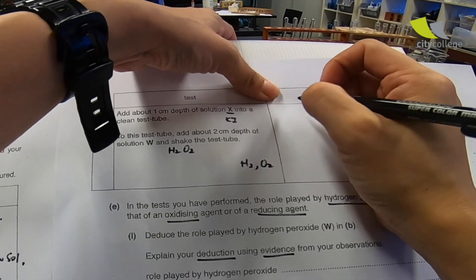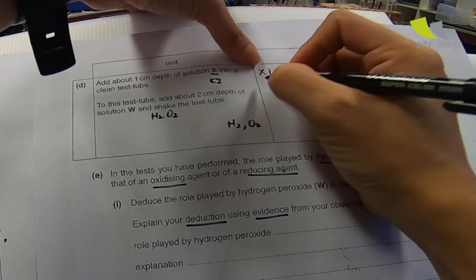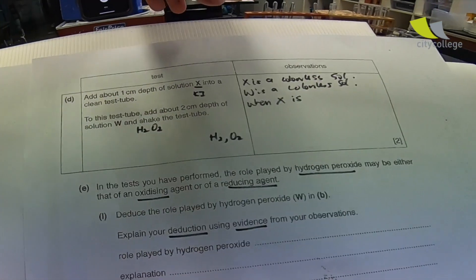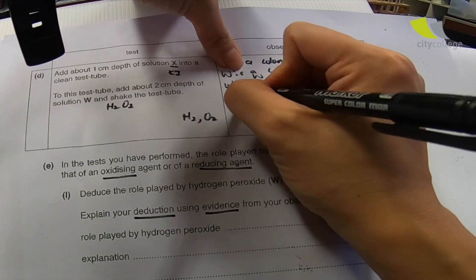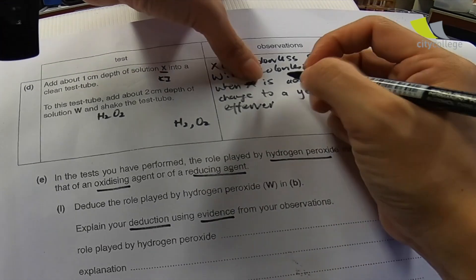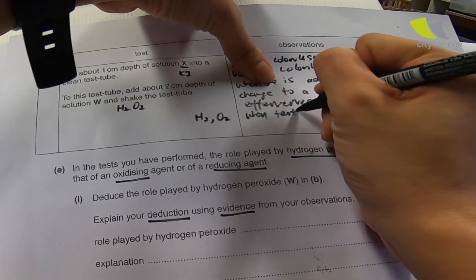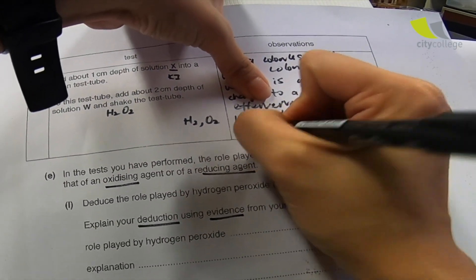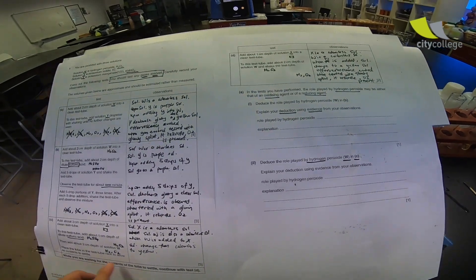X is a colorless solution. W is a colorless solution. When W is added, solution change to a yellow solution, effervescent E-F-F-E-R-V-E-S-C-E-N-C effervescent evolve when tested with glowing splint. It rekindle. O2 present. Now, let's go back to this part. Let's check what happened to the yellow solution.